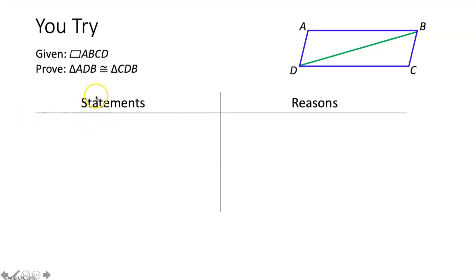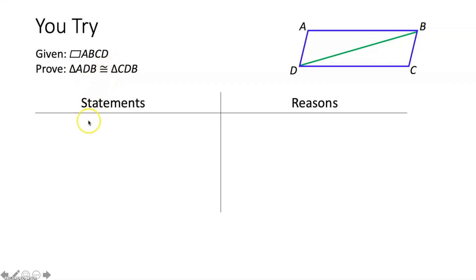In the next proof, the first step is to mark up the figure with the given information. We are given that quadrilateral ABCD is a parallelogram, which doesn't say anything is congruent yet, so we move on to step two and state our given: quadrilateral ABCD is a parallelogram. Reason: given.